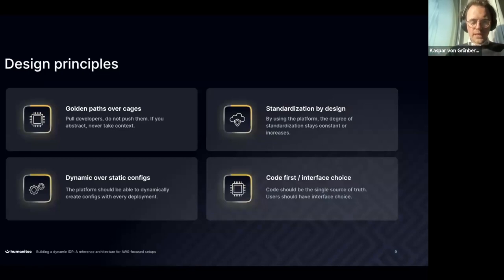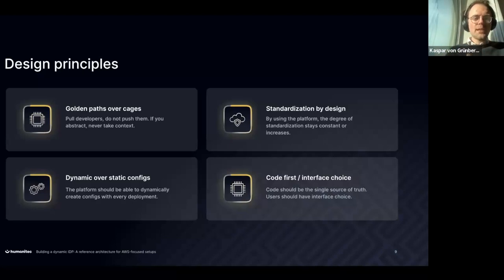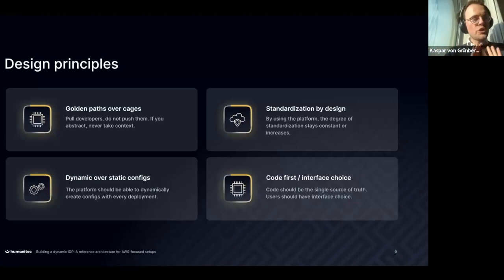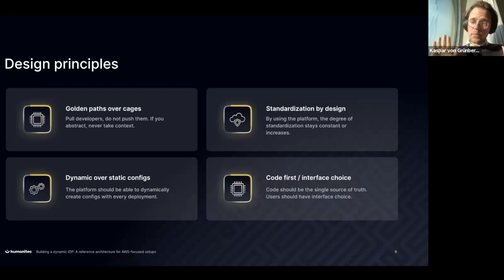What are the design principles we've applied? Number one: golden paths over cages. What does that mean? Very concretely: follow this platform, use this — if you use this, you get certain guarantees. If you want to go off the golden path, please do so. Opaque abstractions — we don't force anybody. You can do whatever you want, go down to the lowest level, but then you're on your own.